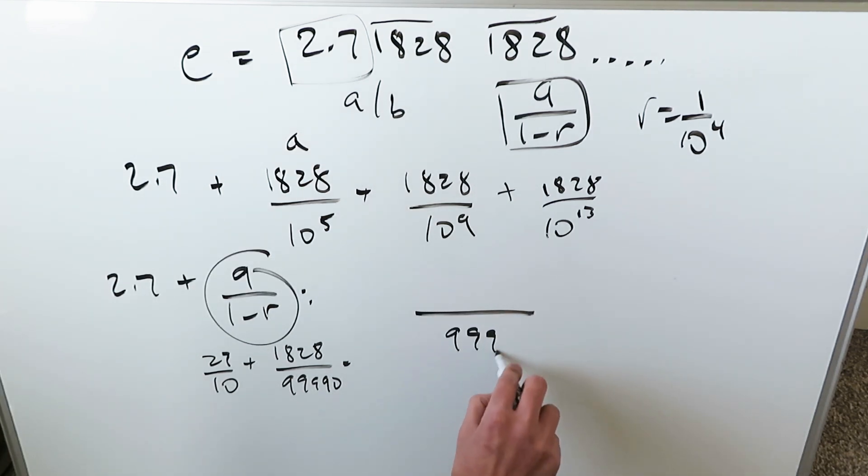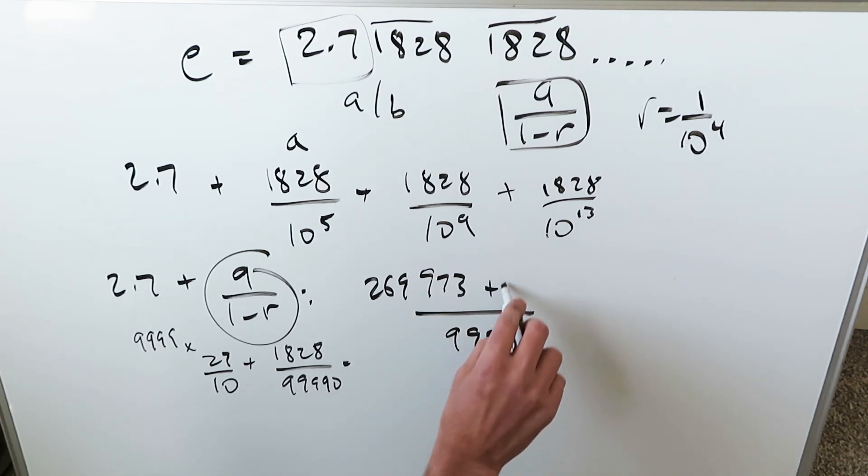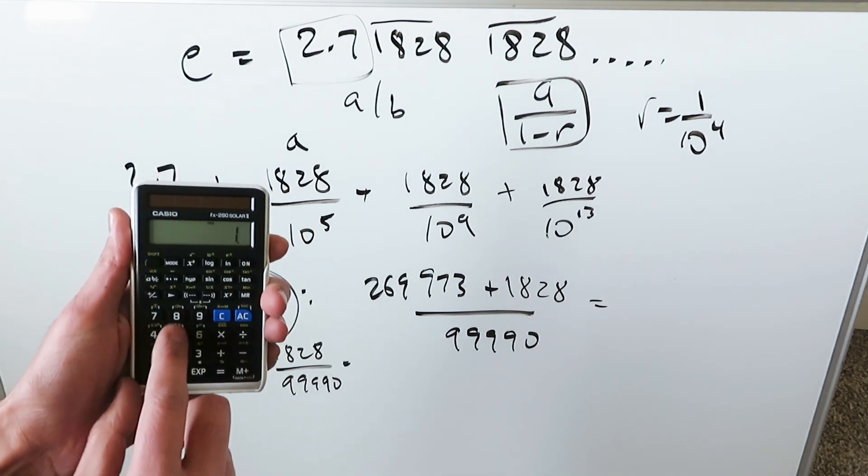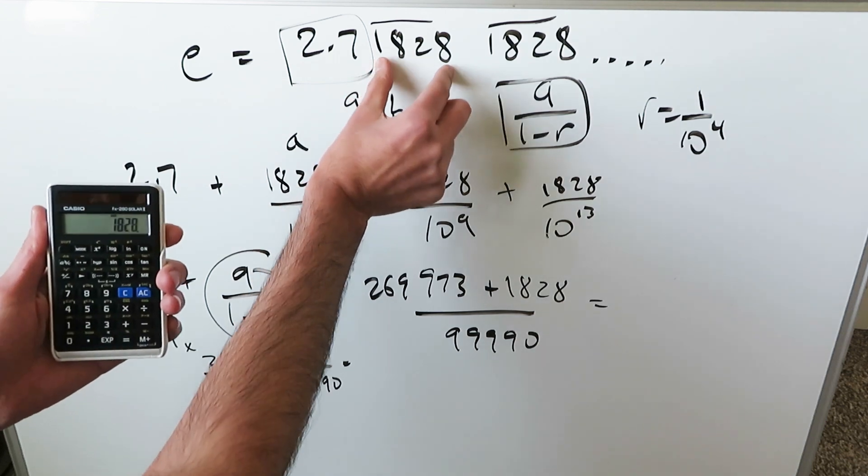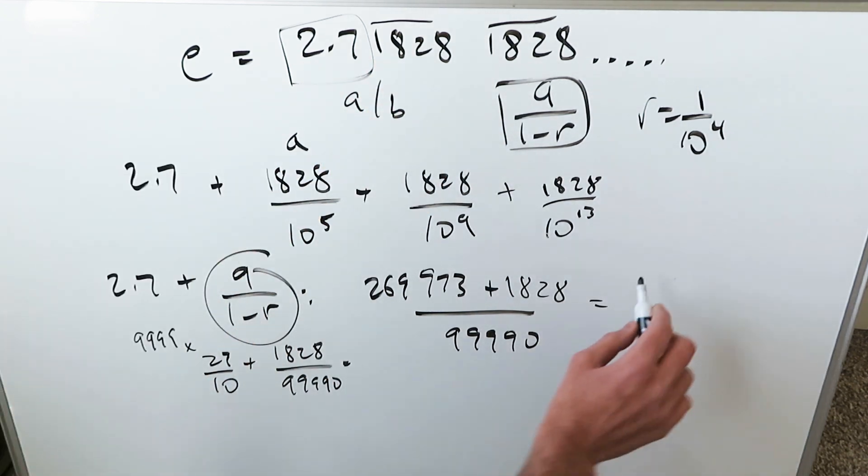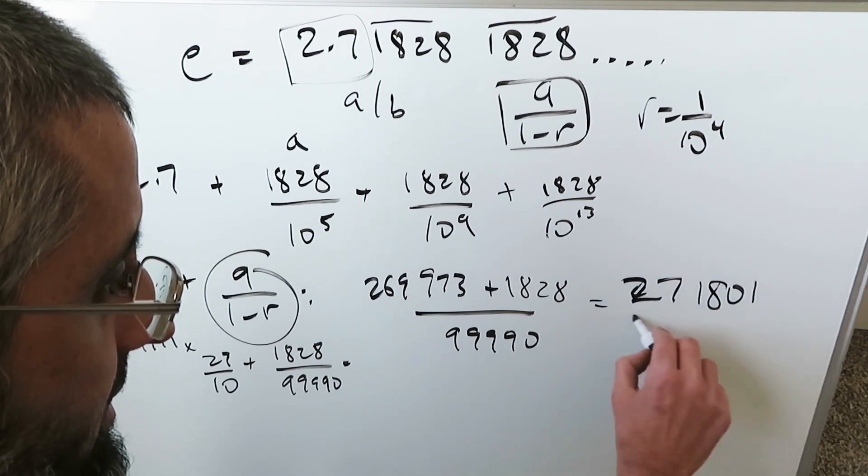99,990. This goes in - I'm going to get from here 269,973 plus this goes in the common denominator, 1 times 1828. What's our end result? Let's add them up: 269,973 plus 1828, which is right here, my repeating part. I'm getting here in the numerator 271,801. 271,801 divided